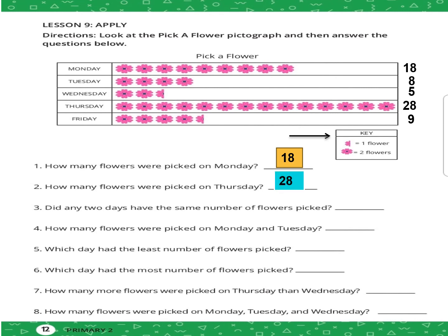Number three: did any two days have the same number of flowers picked? No. Question number four: how many flowers were picked on Monday and Tuesday together? Eighteen plus eight equals twenty-six.